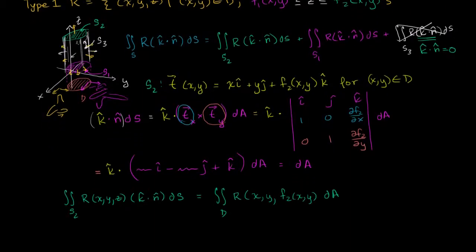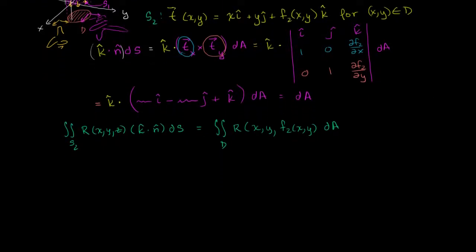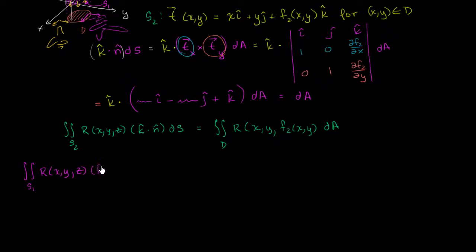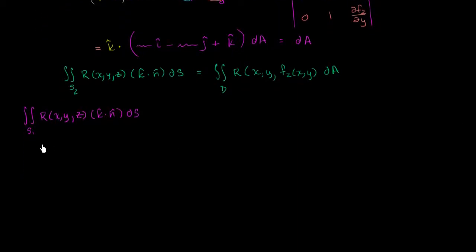In the last video, we evaluated the surface integral of S2, or at least we turned it into a double integral over the domain. Now we're going to do the same exact thing with S1. So let's remind ourselves what we are concerned with. We want to re-express the surface integral over S1 — that is, the surface integral of r(x, y, z) times k dot n dS.